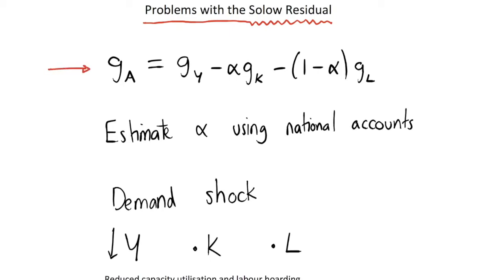We showed that the Solow residual GA as written here can be shown to be equal to this term on the right hand side, and it's just all of our components of output growth that aren't explained by primary factors of production.